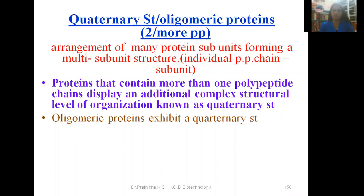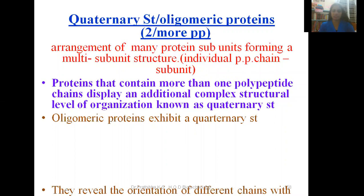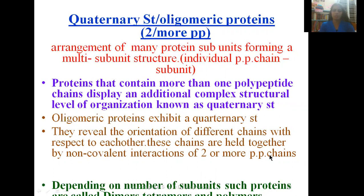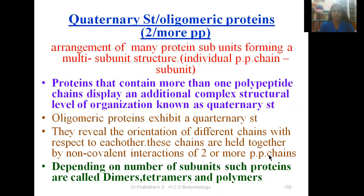Oligo means few — a few polypeptide chains or few protein molecules can be seen in the quaternary structure. They reveal the orientation of different chains with respect to each other. These chains are held together by non-covalent interactions of two or more polypeptide chains.